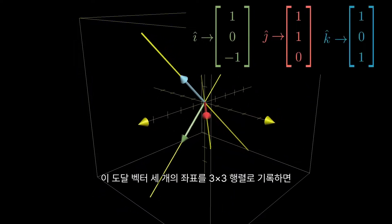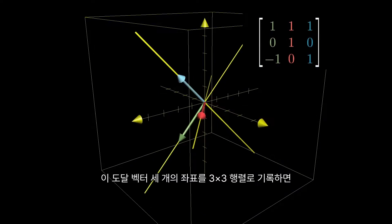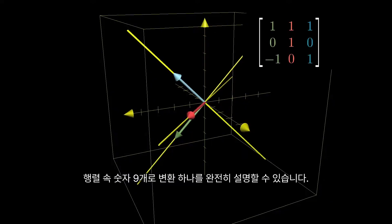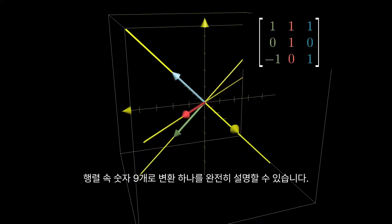Record the coordinates of these three vectors as the columns of a 3x3 matrix. This gives a matrix that completely describes the transformation using only 9 numbers.